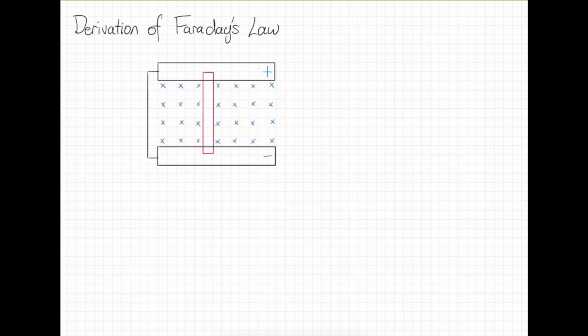If the bars are a length L apart, and we move the rod with a velocity V, how does the magnetic flux change as the rod moves down the rail?